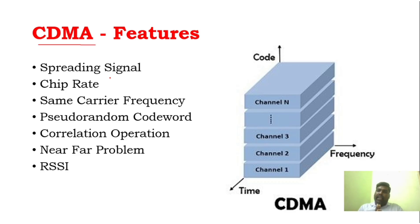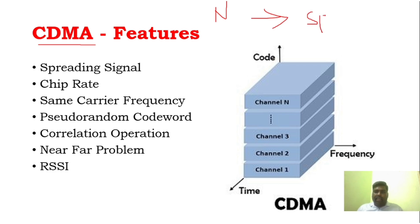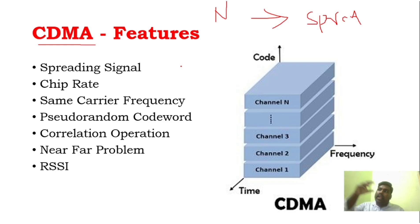Each and every user's data will be multiplied by a particular pseudo-random code. We are multiplying a code with the original data to create a spread signal. We use a pseudo-random code so that the original signal — a narrow band message signal — becomes a spread spectrum signal. One transmitter uses one single pseudo-random code, and the result is a spread signal.